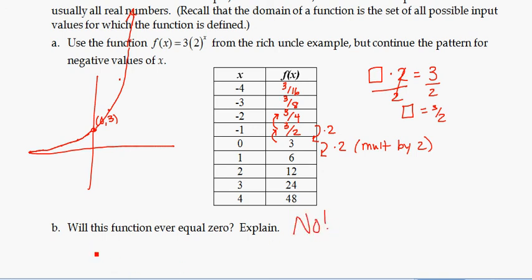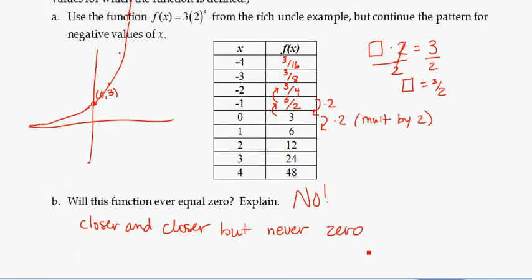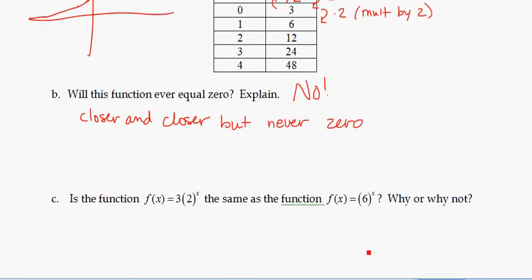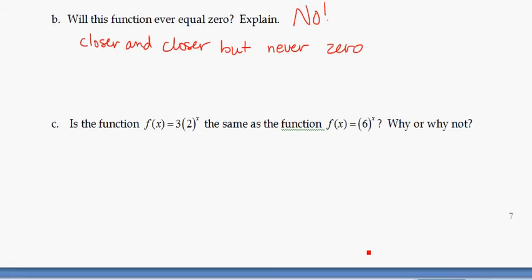And the answer is no. Each value, the values will get closer and closer to 0, but never 0. You can't divide by some number and end up with 0.